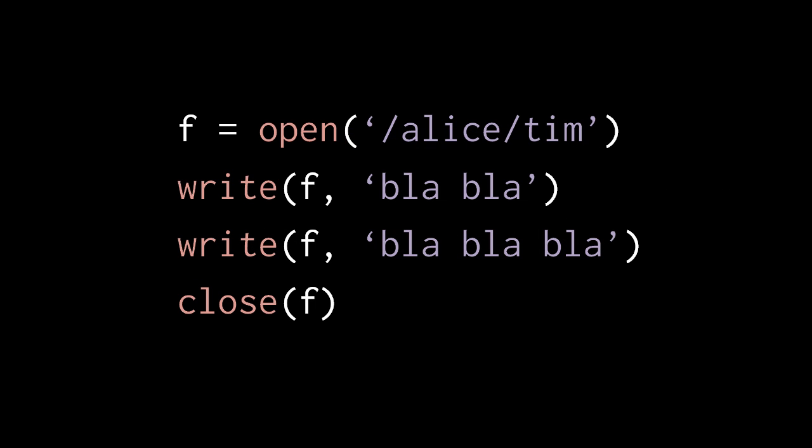Here's what the use of write might look like in code. Say we want to write to the file /alice/tim. First we need to open it, and that call to open returns a file descriptor assigned to f. Then when we call write, we specify the file descriptor so it knows which file we're writing to, and we pass in the data. Here we call write twice — the first writes 'blah blah' to the file, and then the second writes 'blah blah blah'. We write five blahs to the file and then close it because that's good practice.